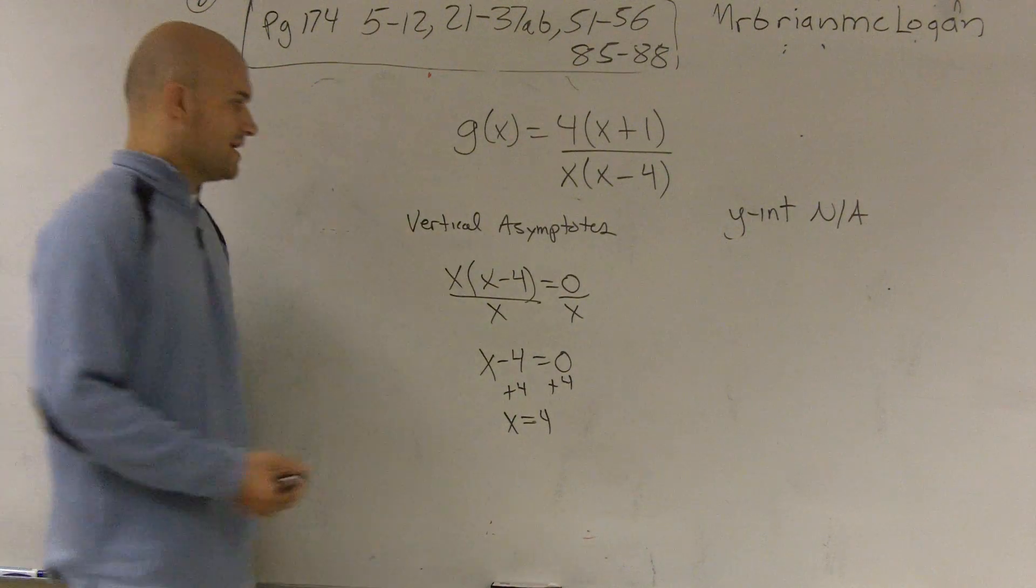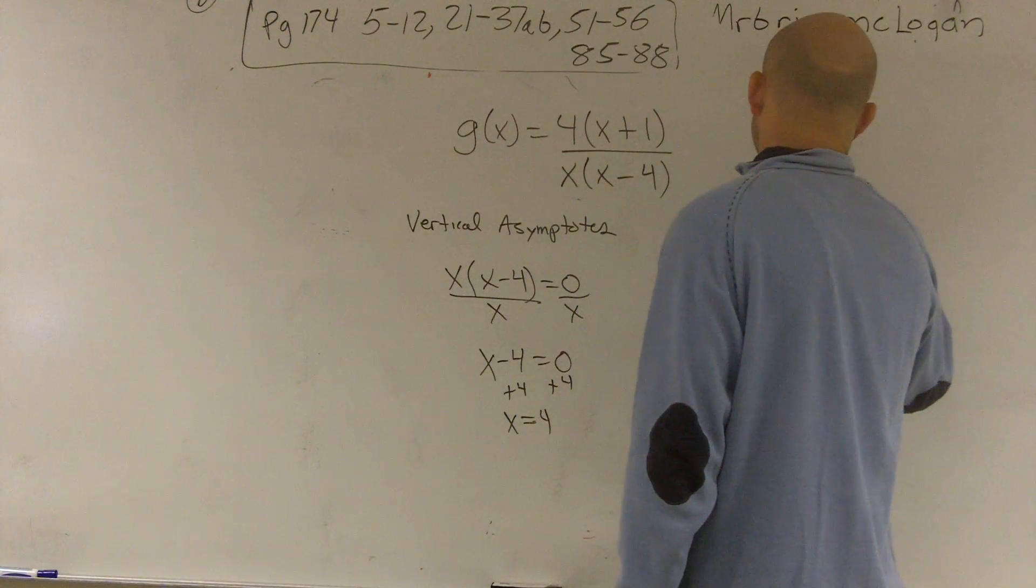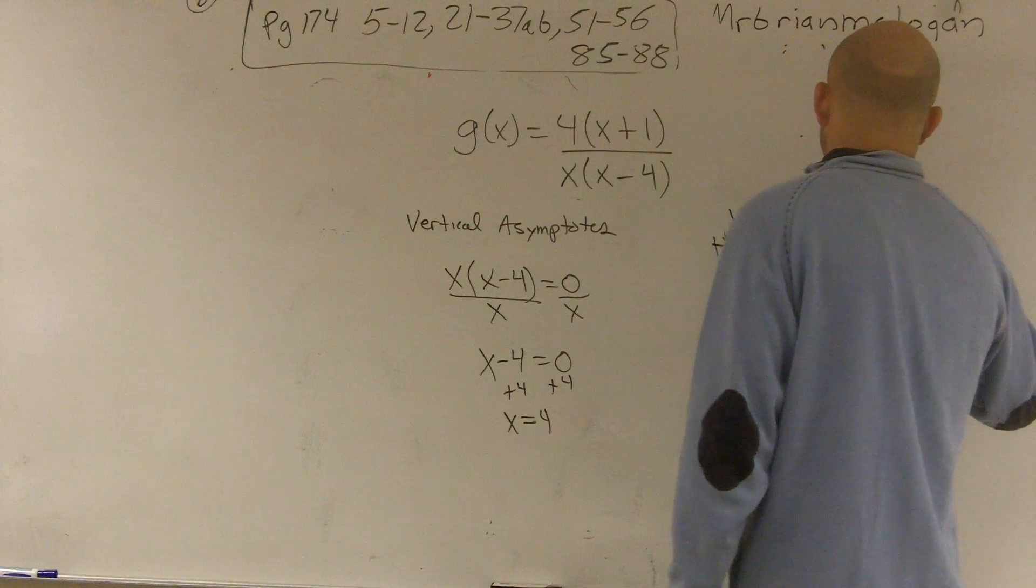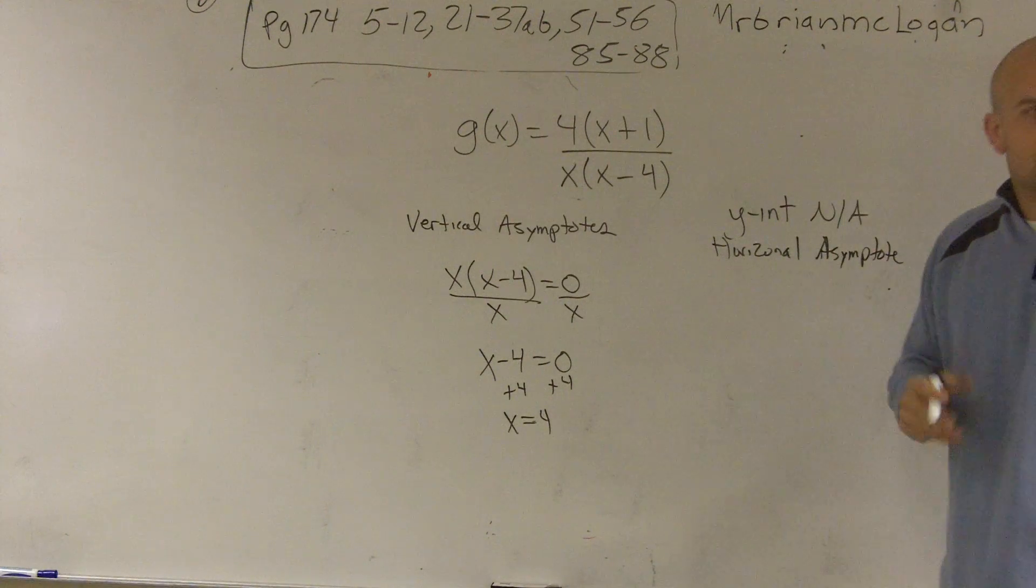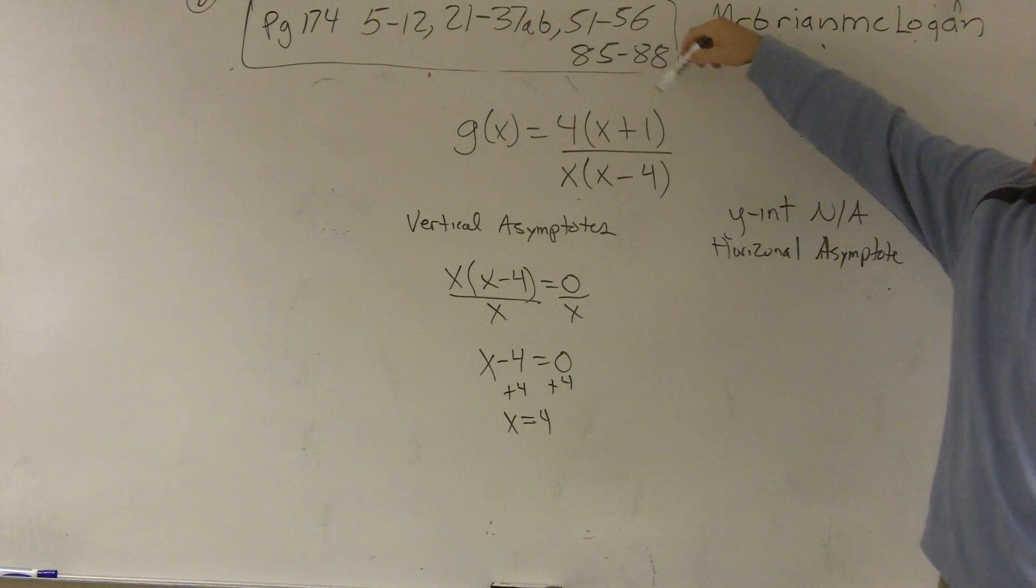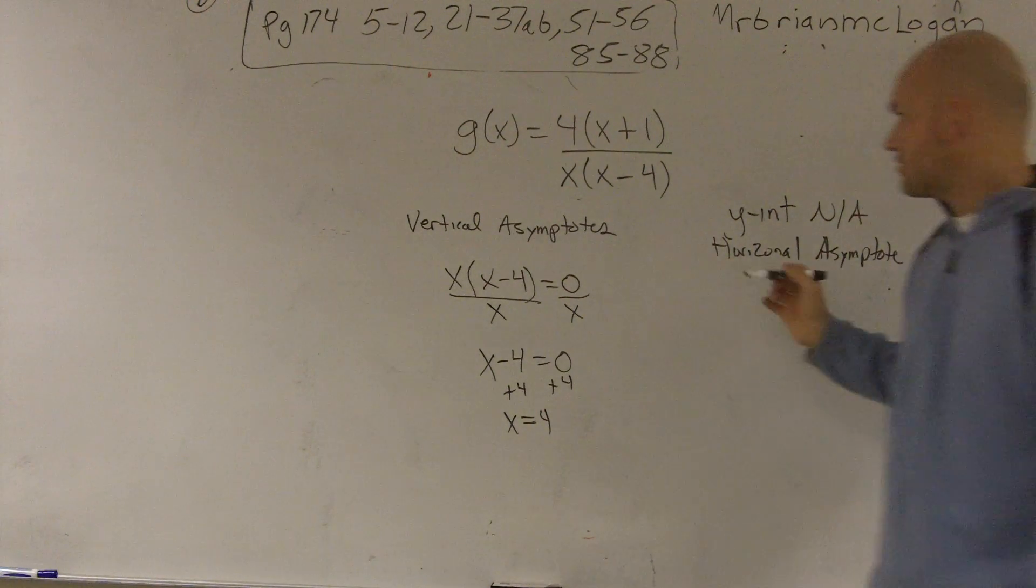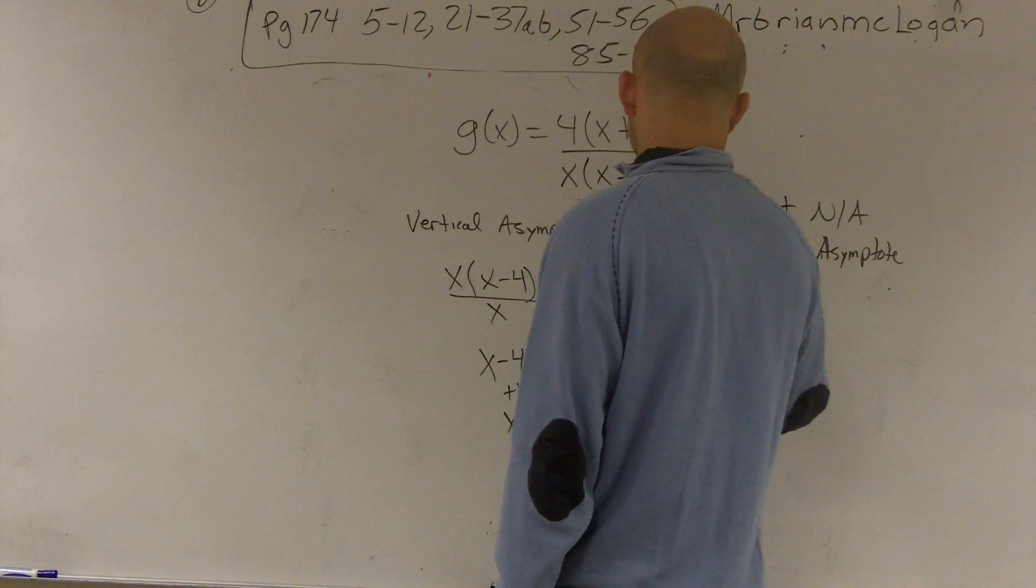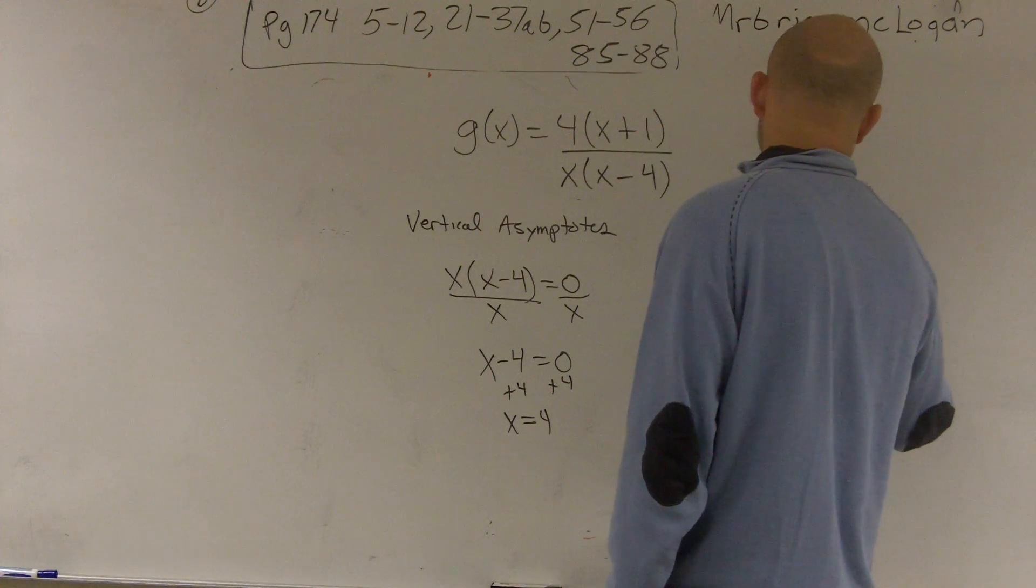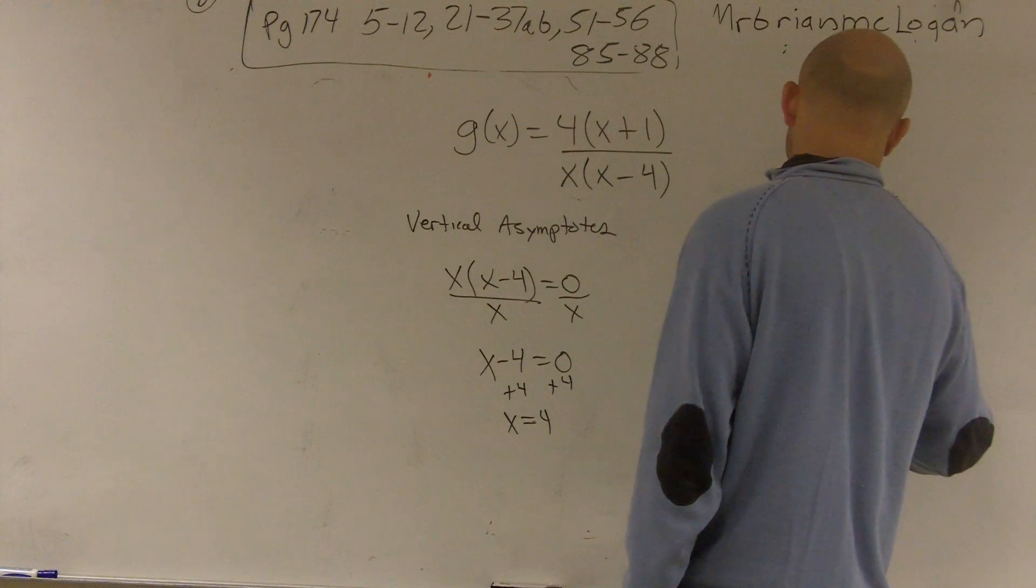Then, to find the horizontal asymptote, what we need to do is we need to look at the degrees of our top and our bottom polynomial. Well, here, I don't really have this written as a polynomial. So I'm going to use the distributed property so I can see exactly what the degrees are. So when I distribute this, I get 4x plus 4 all over x squared minus 4x.